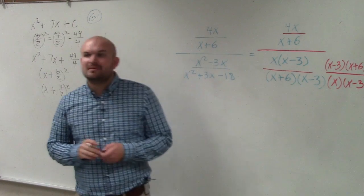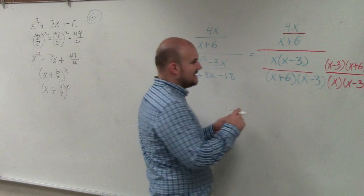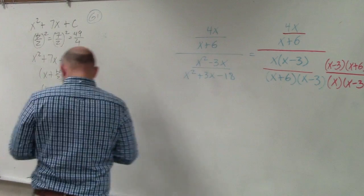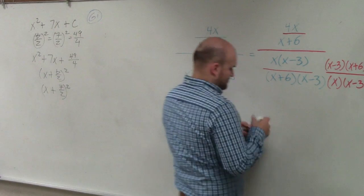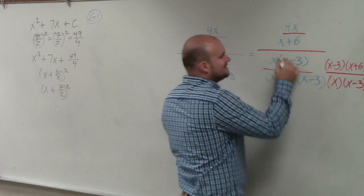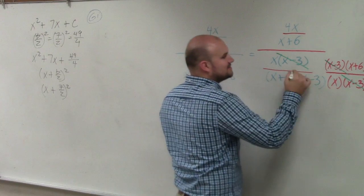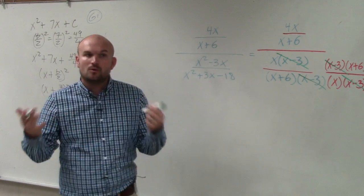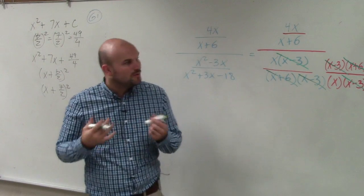The reason why multiplying by its reciprocal works is that division property. You can see that the x minus 3 and the x minus 3 divides to 1, x minus 3 and x minus 3 divides to 1, x plus 6 and x plus 6 divides to 1.